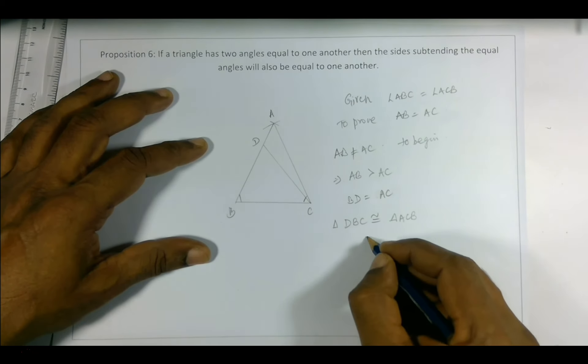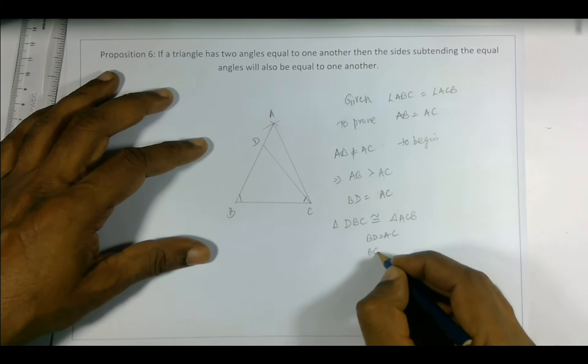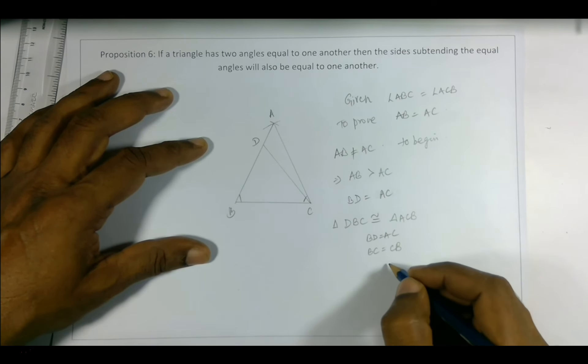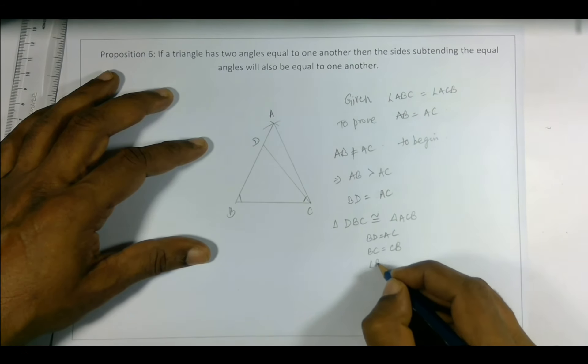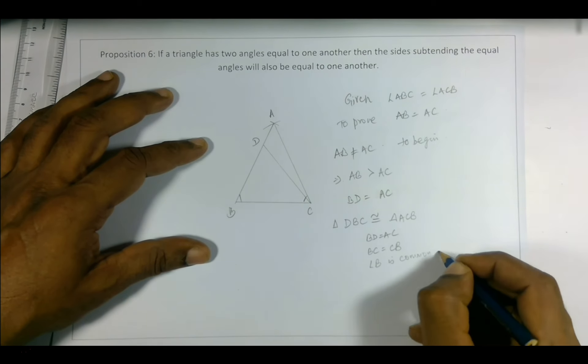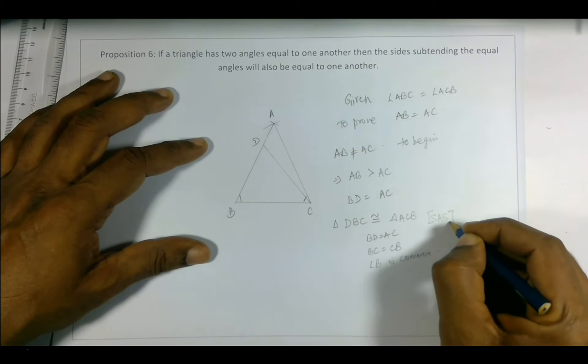Now how? We have already seen BD equal to AC, BC is equal to CB - common side - and angle B is common. So which means side-angle-side, which we have already proved.